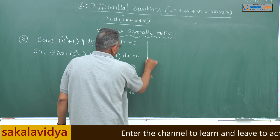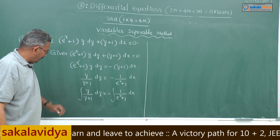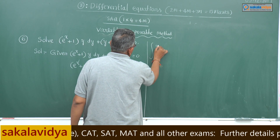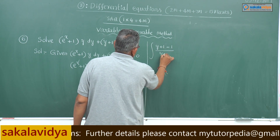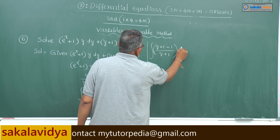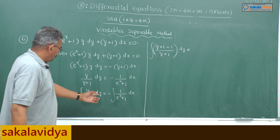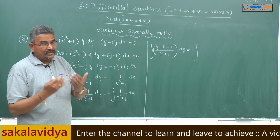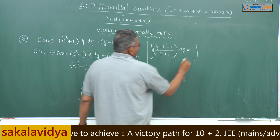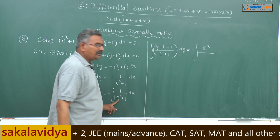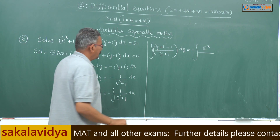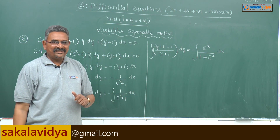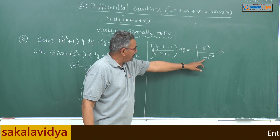Just observe — if you cross multiply again you get the same equation. Now apply integration: integral of y by (y plus 1) dy equals minus integral of 1 by (e^x plus 1) dx. In order to integrate the left hand side, in the numerator add 1 and subtract 1. So this can be written as integral of (y plus 1 minus 1) by (y plus 1) dy. On the right, multiply numerator and denominator by e^(minus x): you get e^(minus x) by (e^(minus x) times e^x is 1, plus e^(minus x)) dx.